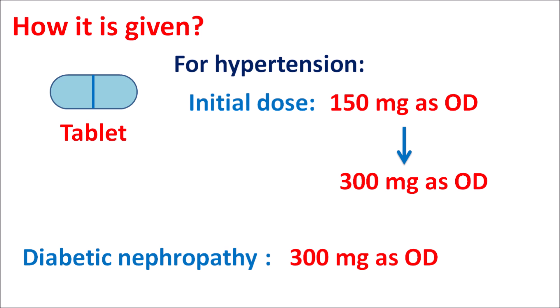Irbesartan is an angiotensin 2 receptor blocker that blocks AT1 receptors, thereby reducing vasoconstriction and decreasing both systolic and diastolic blood pressure. It also reduces nephropathy in type 2 diabetic patients. Orthostatic hypotension and dizziness are important precautions, and the drug can increase acute renal failure. In pregnant women it can produce fetal damage, so it is contraindicated. The drug is started at 150 mg for hypertension but given at 300 mg once daily for diabetic nephropathy.